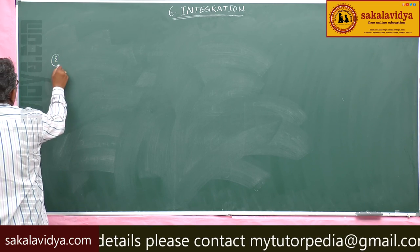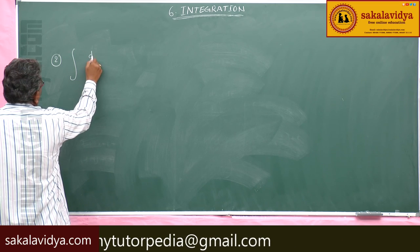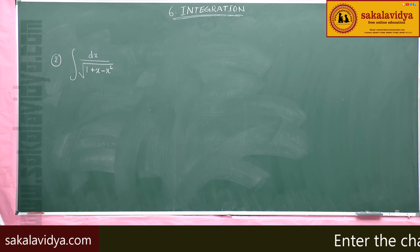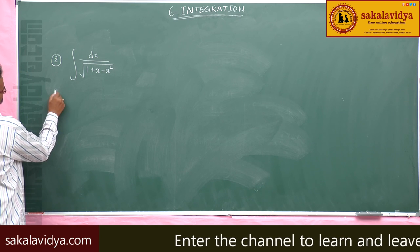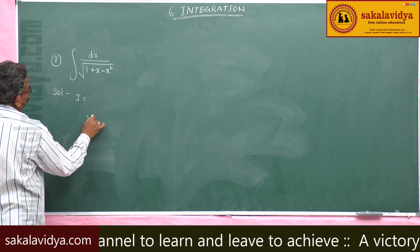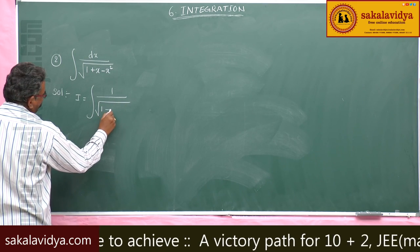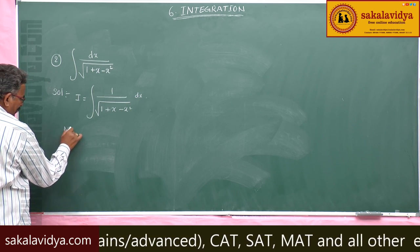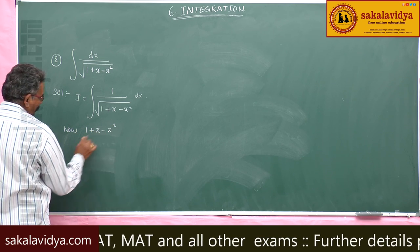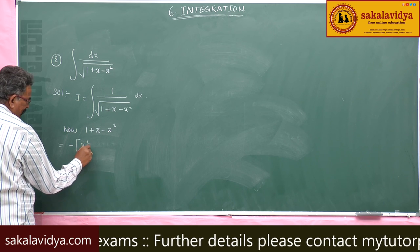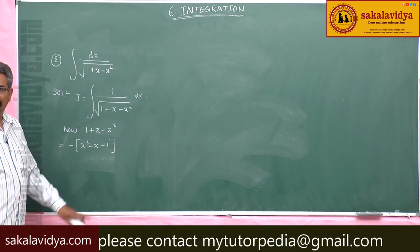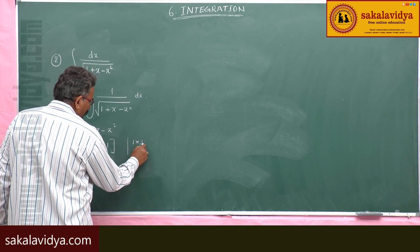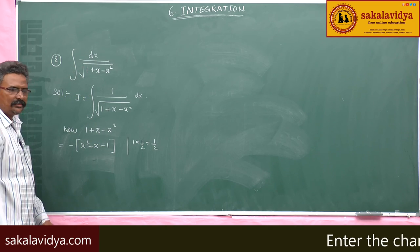Second problem: evaluate the integral dx divided by the square root of 1 plus x minus x squared. Let us write 1 divided by the square root of 1 plus x minus x squared dx. Now, for 1 plus x minus x squared, take out minus 1 as a common factor to get minus(x squared minus x minus 1). The coefficient of x is minus 1; multiply by 1/2 to get 1/2, then add and subtract (1/2) squared.